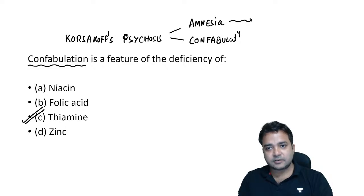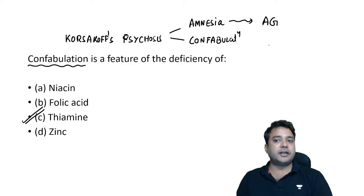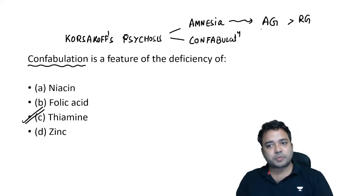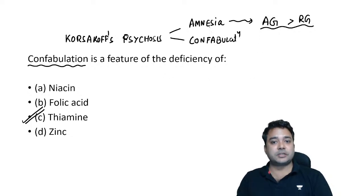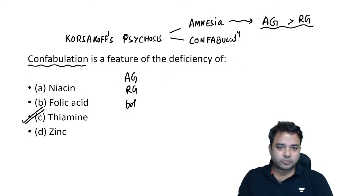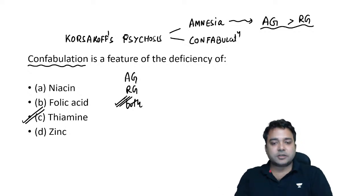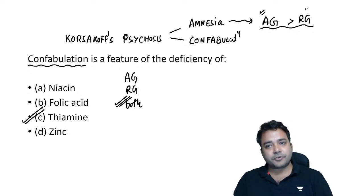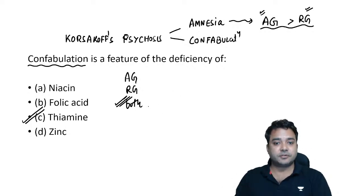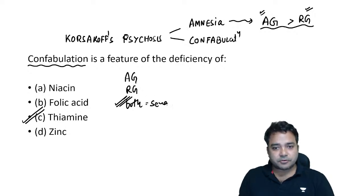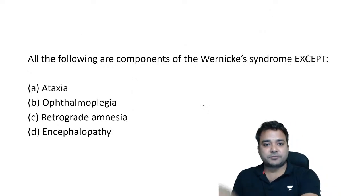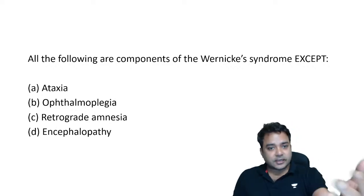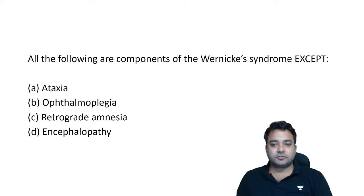The amnesia in Korsakoff psychosis is both anterograde and retrograde. Initially the patient will have anterograde amnesia, and later on retrograde amnesia will also supervene. If a question asks what type of amnesia is shown in Korsakoff psychosis, mark both anterograde and retrograde, as both are eventually seen. When retrograde amnesia occurs the condition becomes severe — it is basically a combination of severe anterograde and retrograde amnesia.